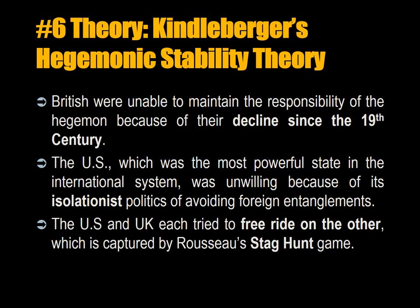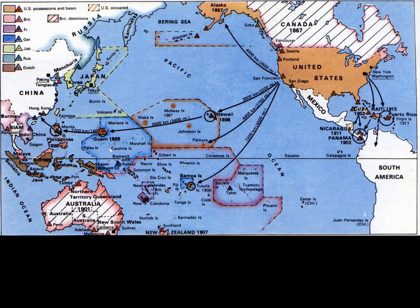In the 1920s and 1930s, the British were unable to maintain the responsibility of being the hegemon because of their decline since the 19th century and the costs of the First World War. The US, which was the most powerful state in the international system, was unwilling because of its isolationist politics of avoiding foreign entanglements in Europe. So the British were basically too poor, and the Americans were not interested in becoming the hegemon. The US and UK each tried to free ride on the other's power, which is captured by Rousseau's stag hunt game.